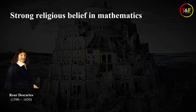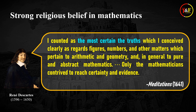I will just introduce a few of their remarks. First, Descartes, who initiated the tradition of using the word 'real' to refer to rational and irrational numbers, said: 'I counted as the most certain the truth which I conceived clearly as it regards figures, numbers, and other matters which pertain to arithmetic and geometry, and in general, to pure and abstract mathematics.' He also said, 'Only the mathematicians contrived to reach certainty and evidence.'